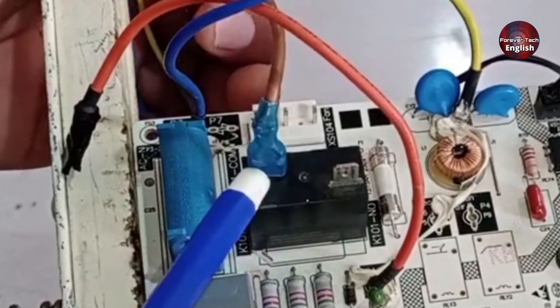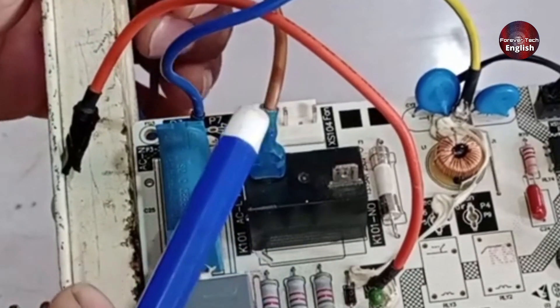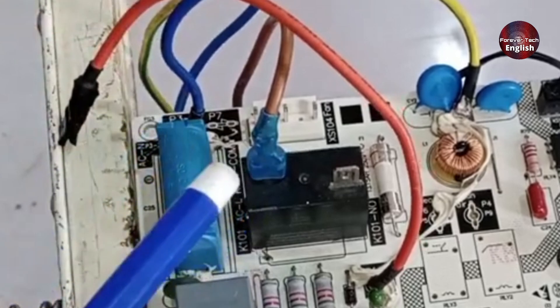First, you can see that the main supply is connected to this relay. Check the supply on its connector. If there is any voltage issue, fix it right there.